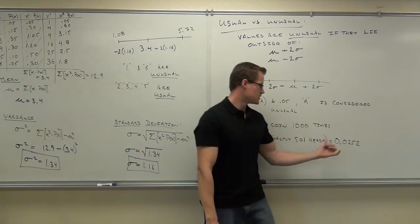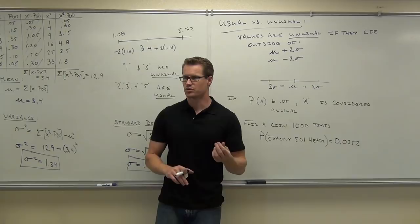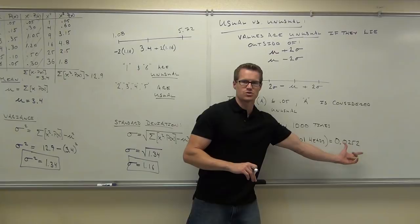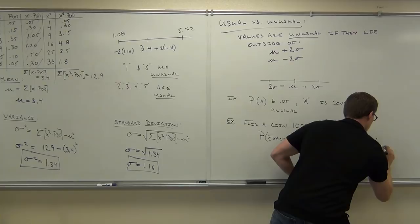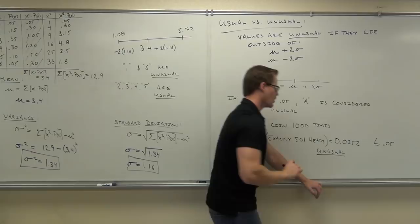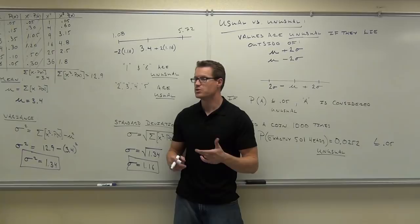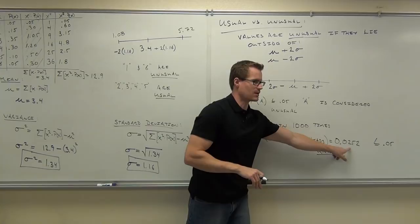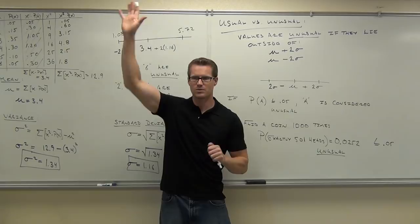The probability of getting exactly 501 heads out of 1000 coin flips is 0.00252 — a little over 2%. So there's a 2.5% chance of getting exactly 501 heads. Is that usual or unusual? Look at the probability: is 0.00252 less than or equal to 0.05? Yes — this is well below 0.05, so getting exactly 501 heads is unusual.